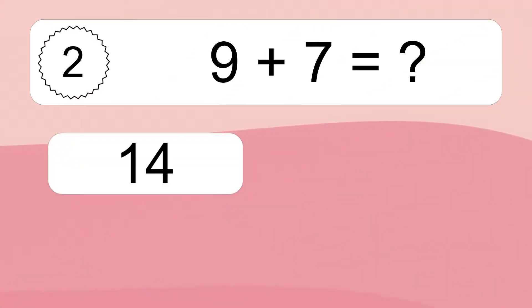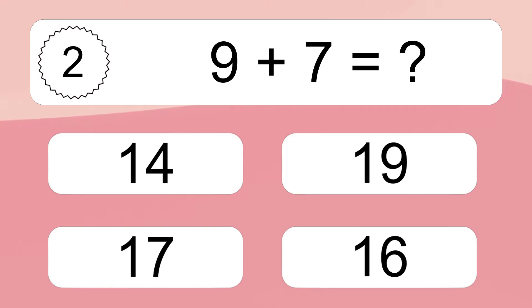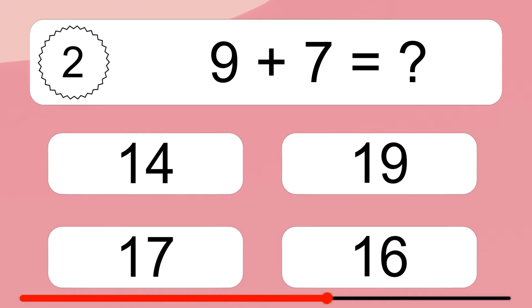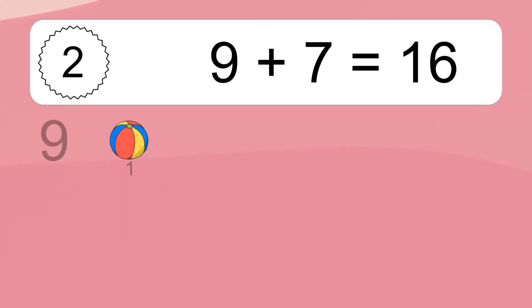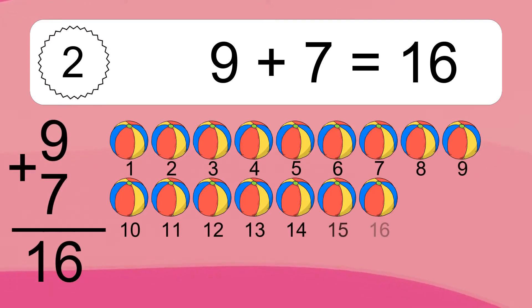9 plus 7 equals what? 9 plus 7 equals 16.